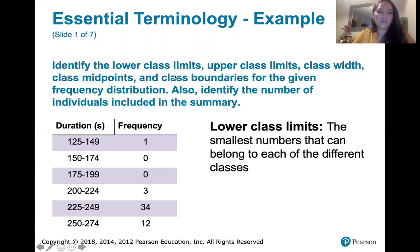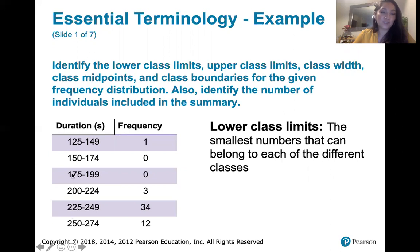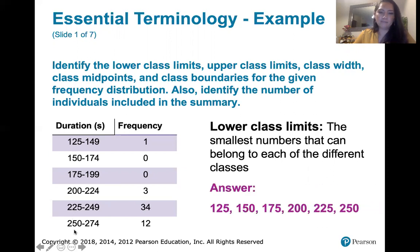The first question asks us to identify the lower class limits. Lower class limits are the smallest numbers that can belong to each of the different classes. So the lowest number in each class here is just 125, 150, 175, 200, 225, and 250 — it's just the number on the left. It's actually very simple. Those are our lower class limits.